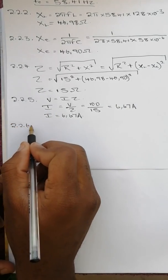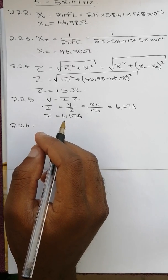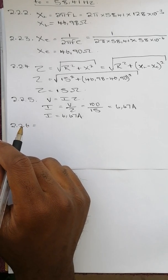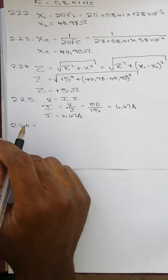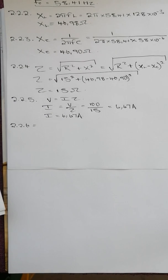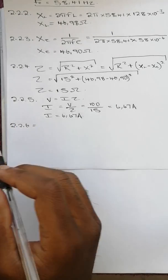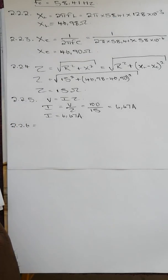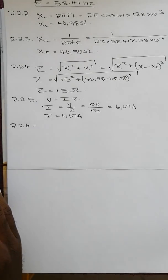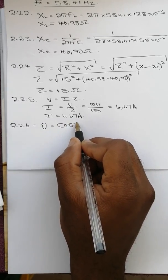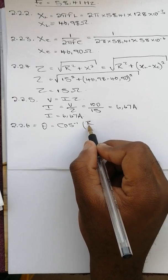2.2.6 says calculate the phase angle between the line current and the applied voltage. So to calculate this angle we are actually calculating the phase angle which tells us whether the current is lagging or not, and it's given by the formula theta equals cos inverse R over Z.